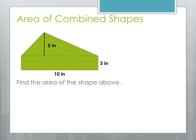The area of a rectangle is length times width. The length here is 10 and the width is 3 — remember those are interchangeable, it doesn't matter which one you pick. When we multiply those two together we get an area of 30 square inches.